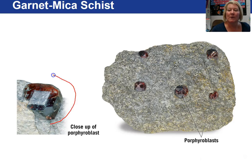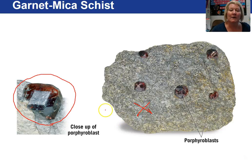Here's an example of a porphyroblast, and this is the groundmass, which is made up of mica. I can see the mica, so I would call it at least a schist grade, and I would name the rock a garnet mica schist.